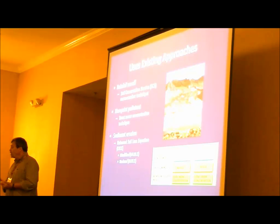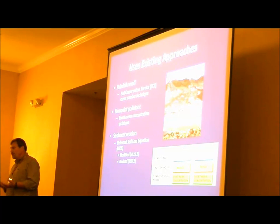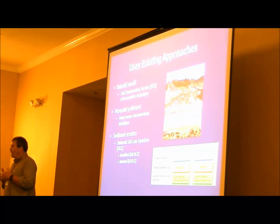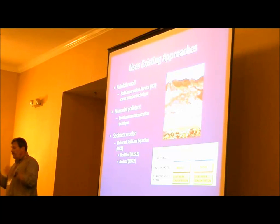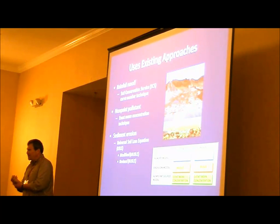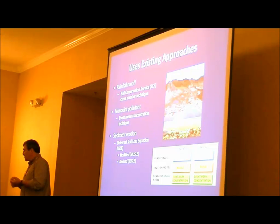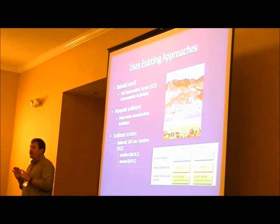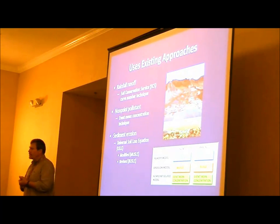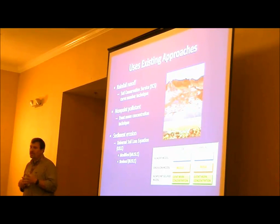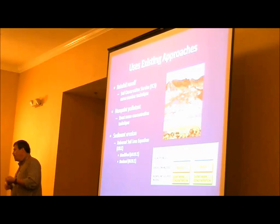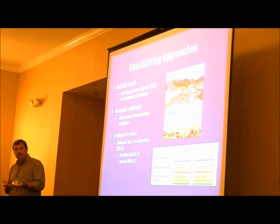Non-point source pollutants are modeled using the Event Mean Concentration concept. For erosion, because we were in this really dry part of Hawaii, we wanted to use a version of the Universal Soil Loss Equation. We use the Revised Universal Soil Loss Equation, which is more appropriate for annual estimates. But our partners said they might only get seven rainfall events a year, with some averaging nearly 160 inches of rain out of those seven events — huge storms, not very many. So we put two erosion models in: MUSLE, the modified version, which is more appropriate for individual events, versus RUSLE.